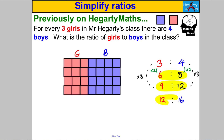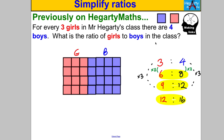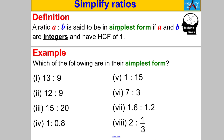It just so happens that 6 to 8, 9 to 12, and 12 to 16 are what's called equivalent ratios to 3 to 4. The most simplest ratio is called the ratio in simplest form — it's the ratio from which all other equivalent ratios come, a bit like a fraction in simplest form. In general, a ratio a to b is said to be in simplest form if a and b are integers — whole numbers — and their highest common factor is 1.